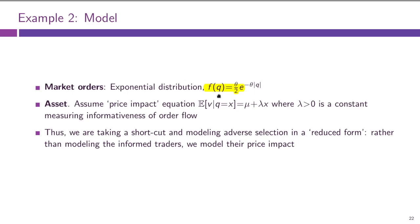We assume informed traders behave so as to generate a linear price impact equation, so the expected value of the asset conditional on a given order size Q is given by E[V | Q] = μ + λQ. This behavior does not depend on the limit traders' strategy in this example — it's a pure assumption for simplicity. We are trying to figure out how limit traders will behave in this environment.